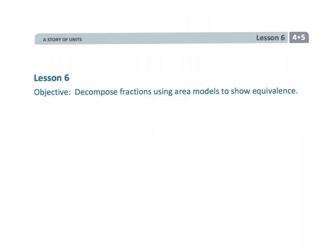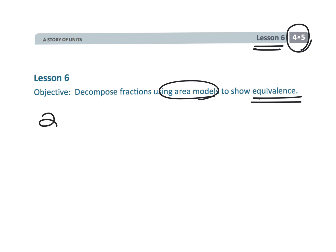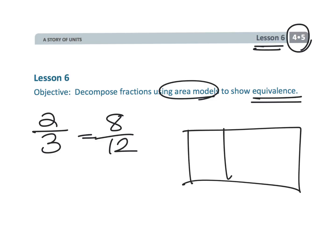And that wraps up fourth grade, module five, lesson six — showing equivalents using the area model for any two fractions. For example, two-thirds is equivalent to eight-twelfths, and we use the area model to show that that is true.